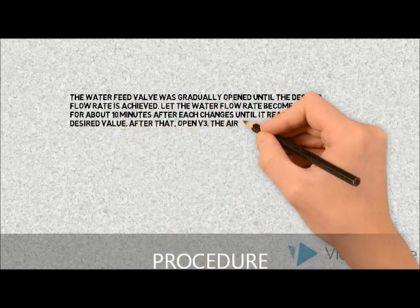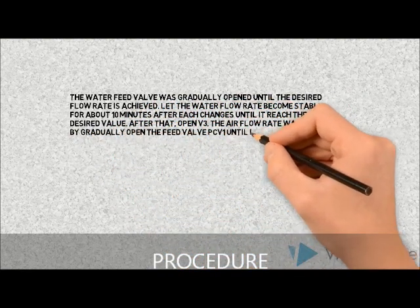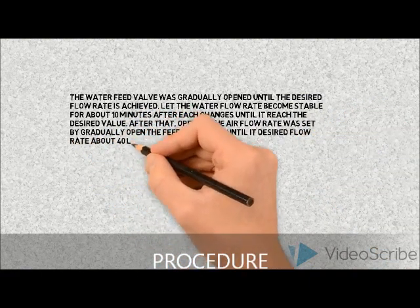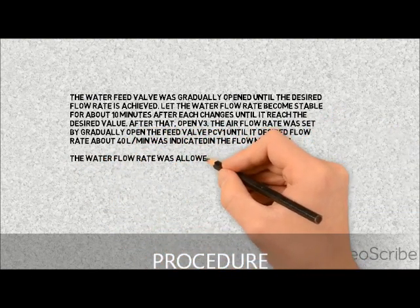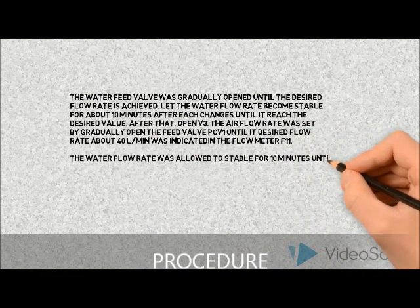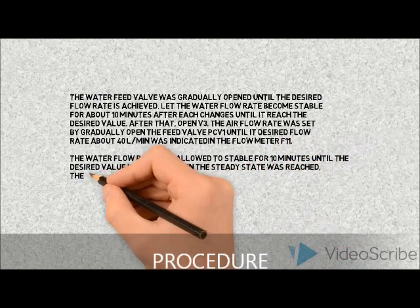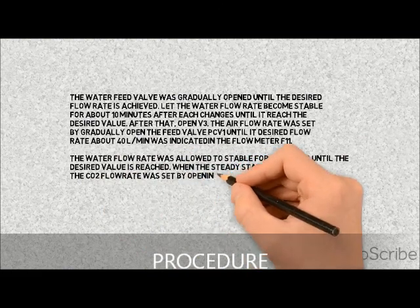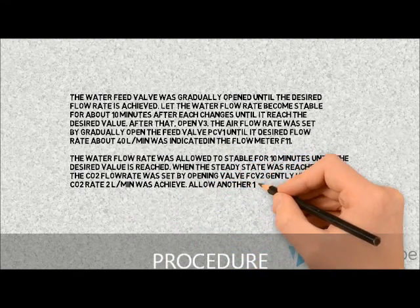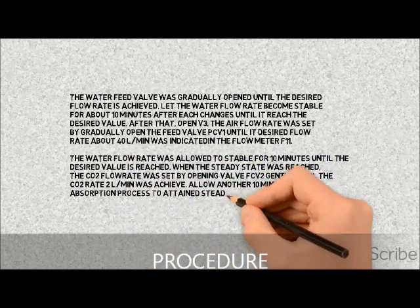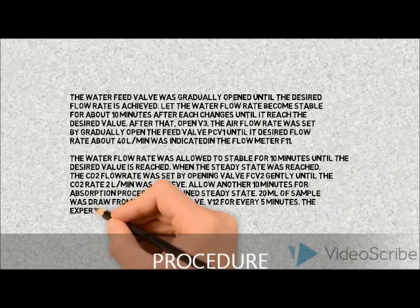Let the water flow rate become stable for about 10 minutes after it changed until it reached the desired value. After that, open V3. The air flow rate was set by gradually opening the feed valve PCV1 until the desired flow rate of about 40 L per minute was indicated on flow rate meter F11. The water flow rate was allowed to stabilize for 10 minutes. When steady state was reached, the CO2 flow rate was set by opening valve FCV2 gently until the CO2 rate of 2 L per minute was achieved. Allow another 10 minutes for the absorption process to attain steady state. A 20 ml sample was drawn from outlet valve V12 every 5 minutes. The experiment was repeated for 60 L per minute.